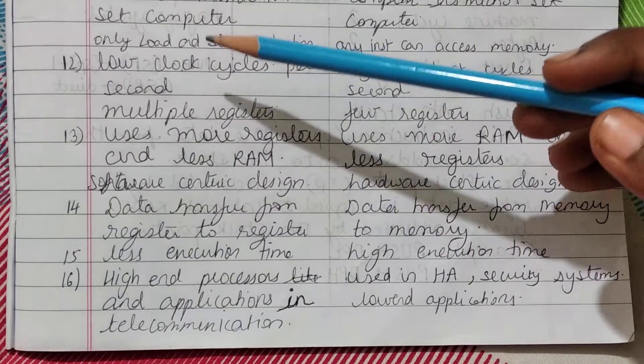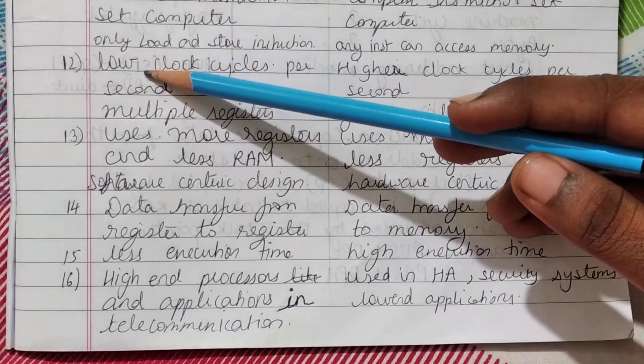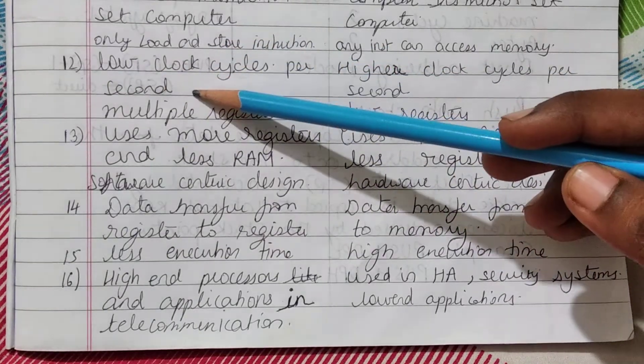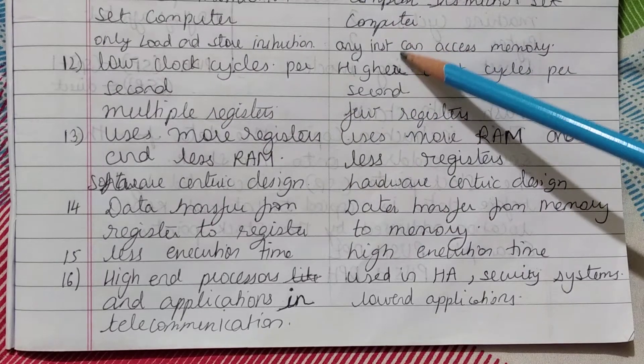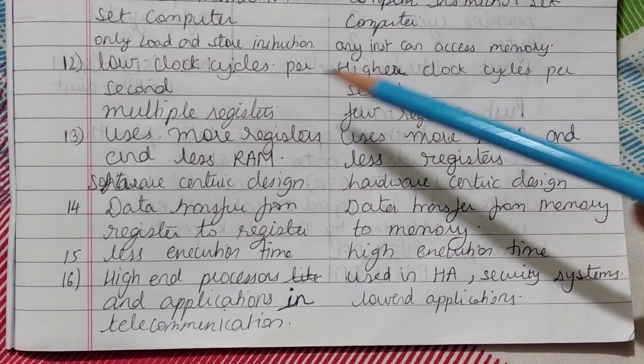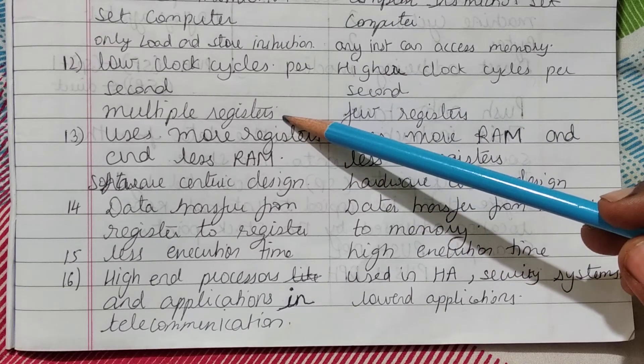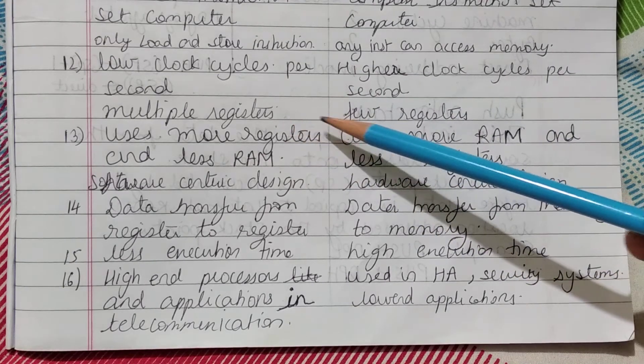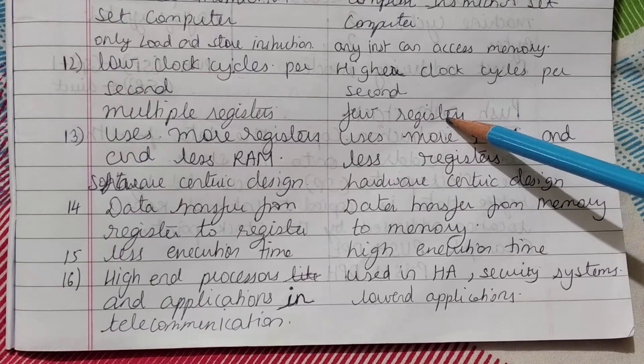RISC has lower clock cycles per second, while CISC has higher clock cycles per second. RISC has multiple registers, but CISC has only a few registers.